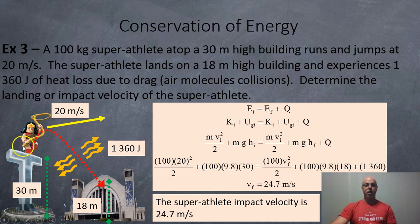So here's the picture for it. So you should always draw a picture in your questions. So the person is going to jump off this 30 meter tall building at 20 meters per second. They're going to experience heat loss on the way down of 1,360 joules. And they're going to land on top of this building, which is 18 meters high.